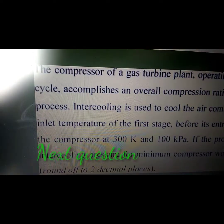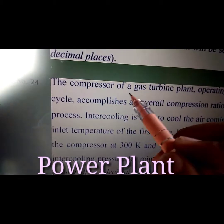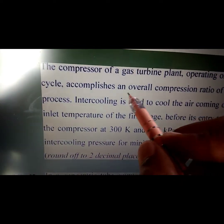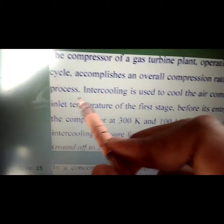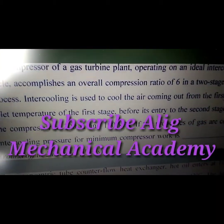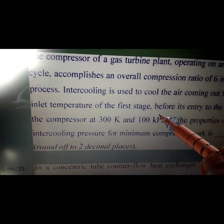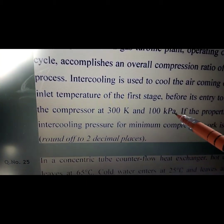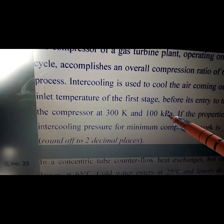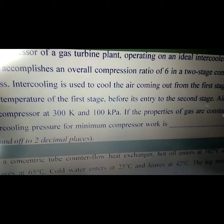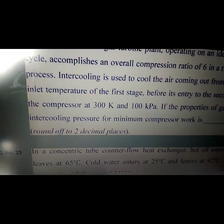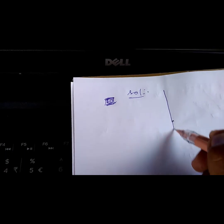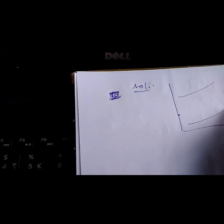Now I will solve question number 24. The compressor of a gas turbine plant operating on an ideal intercooled Brayton cycle accomplishes an overall compression ratio of 6 in a two-stage compression process. Intercooling cools the air from the first stage back to the inlet temperature before entry to the second stage. Air enters the compressor at 300 Kelvin and 100 kilo Pascal. Find the intercooling pressure for minimum compression work.